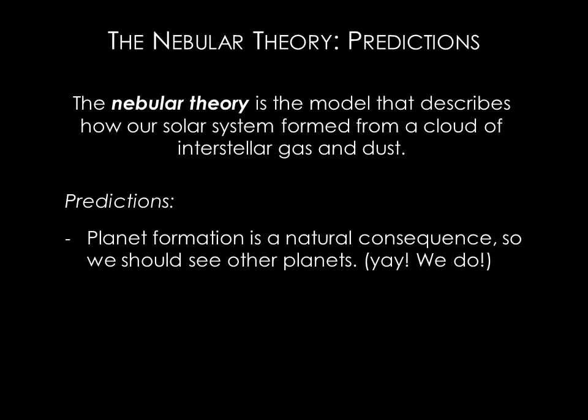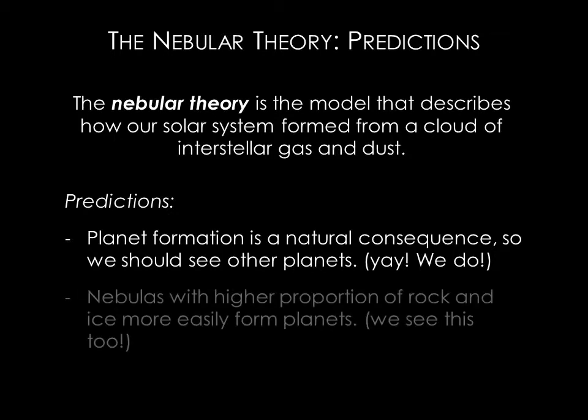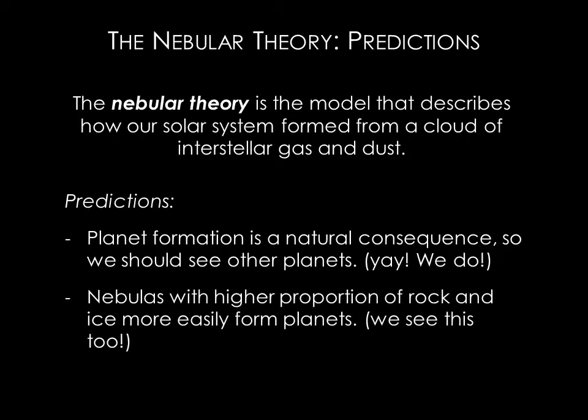That's good, because this is what we see. Also, the theory says planet formation begins with condensation of solid particles of rock and ice, which then accrete to larger sizes. We therefore expect that a nebula with lots of rock and ice would form planets more easily, and we see this, at least for Jovian planets.